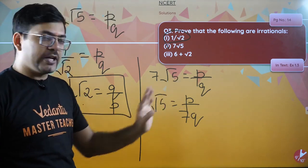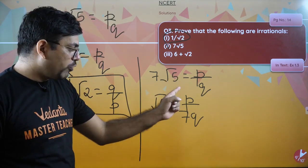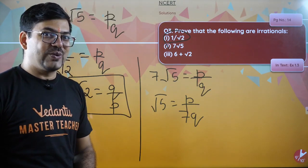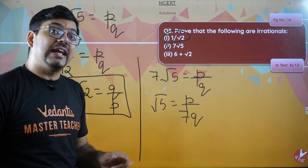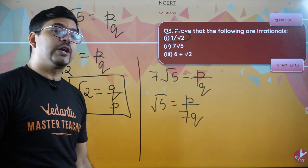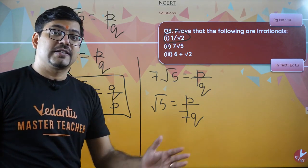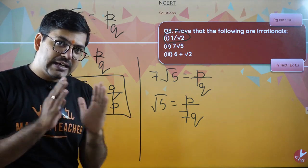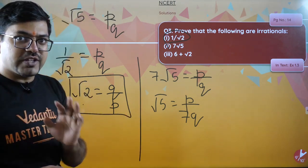Once you got this, now you will write the same thing: since p by q was a rational number, therefore p by 7q will also be a rational number. But we know that root 5 is irrational, and irrational cannot equal rational. Hence our assumption is wrong, therefore this is an irrational number.